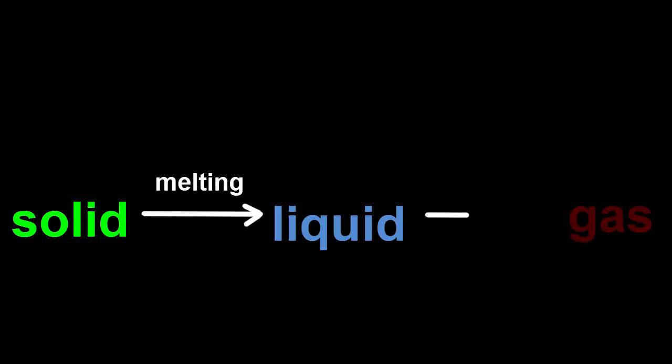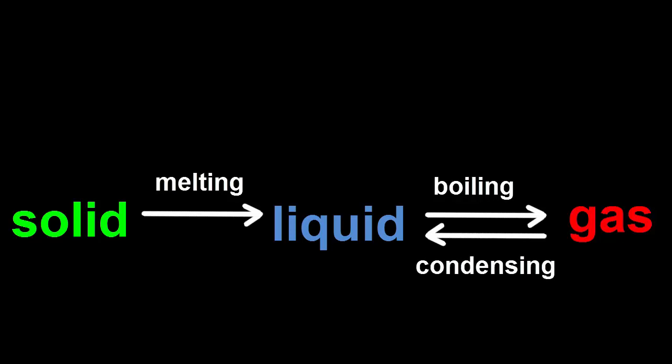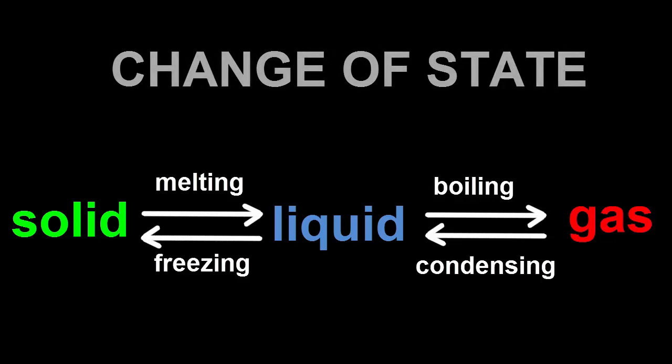Melting from a solid to a liquid, boiling from a liquid to a gas, condensing from a gas to a liquid, and freezing from a liquid back into a solid are all examples of a change of state.